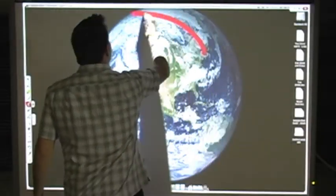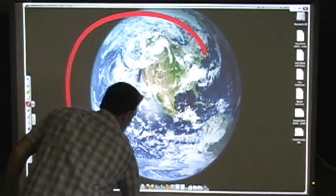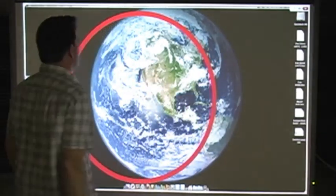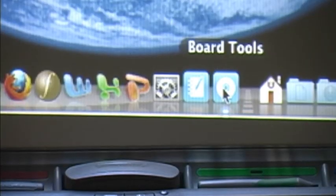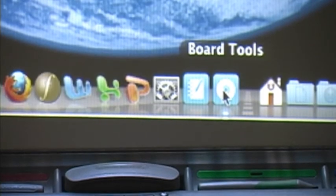Sometimes the smart board gets out of alignment. When this happens, the ink will appear some distance away from where you are actually writing. In that case, use Orient to realign it.